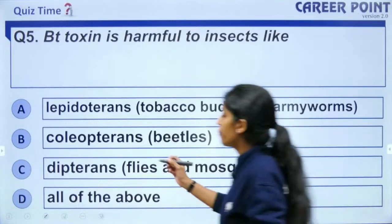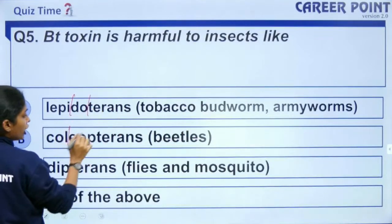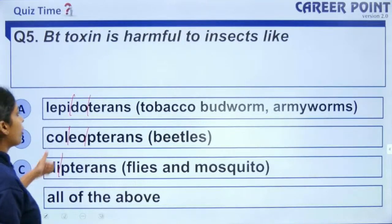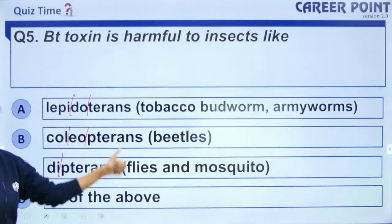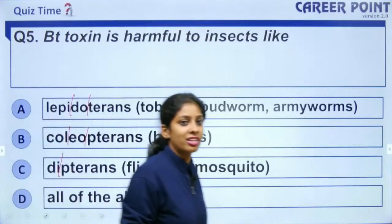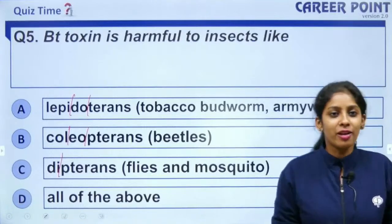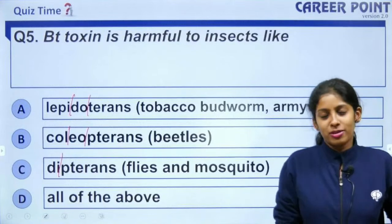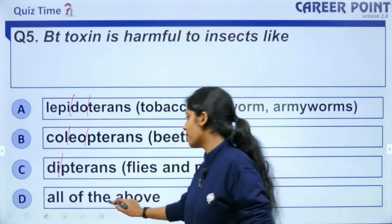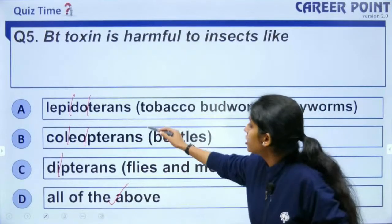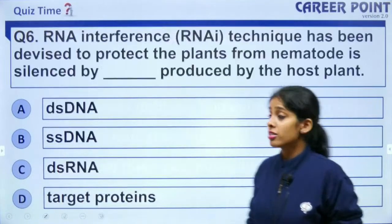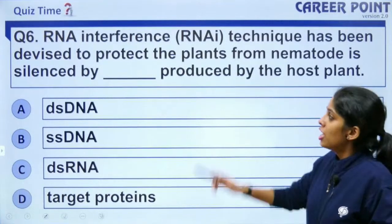Question 5: Bt toxin is harmful to insects like lepidopterans, coleopterans, dipterans, or all of the above? Lepidopterans include tobacco budworm and armyworm. Coleopterans are beetles. Dipterans are flies and mosquitoes. The answer is all of the above — the insecticidal protein can kill all of these groups.